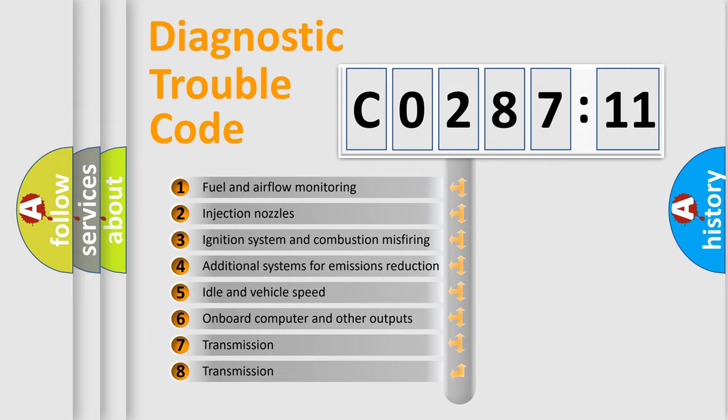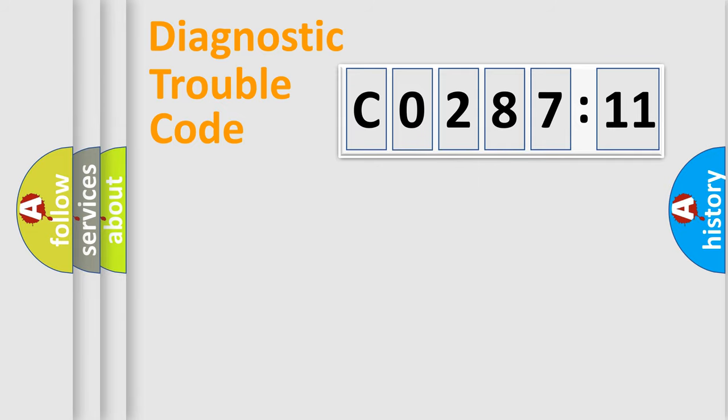The third character specifies a subset of errors. The distribution shown is valid only for the standardized DTC code. Only the last two characters define the specific fault of the group.